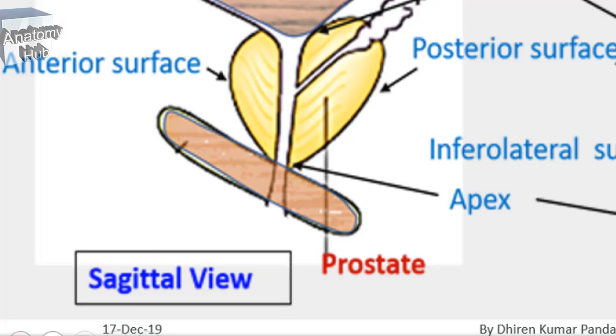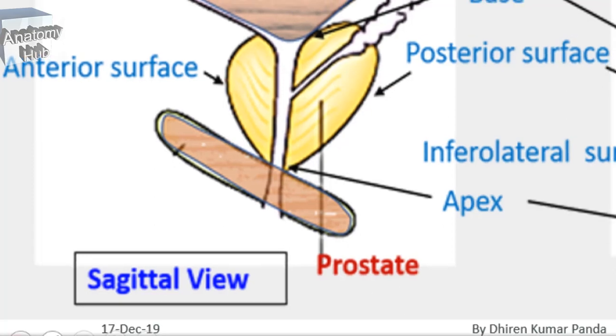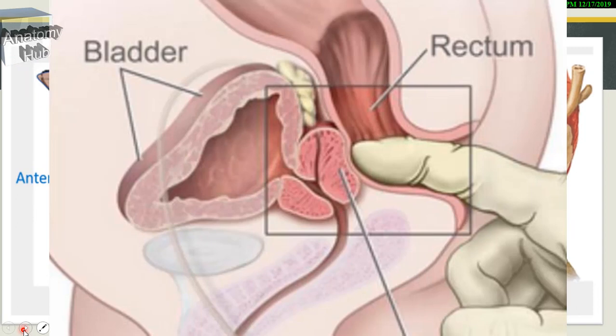The posterior surface of the prostate is flat and is marked by a distinct vertical median groove. This groove begins above at the base of the prostate where the two ejaculatory ducts enter. It is palpable on per-rectal examination. The posterior surface is related to the lowest part of the rectum and rectal ampulla, as you can see in this picture.